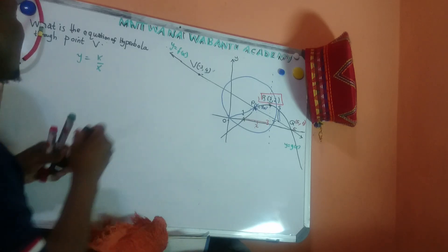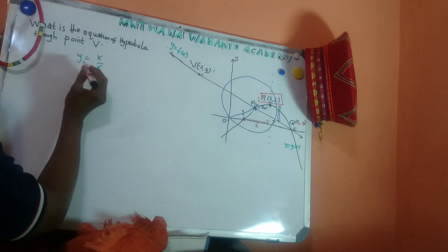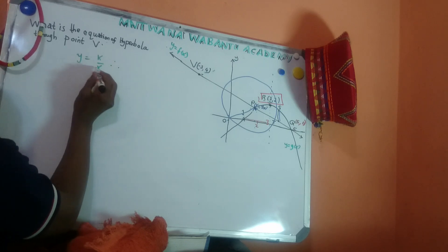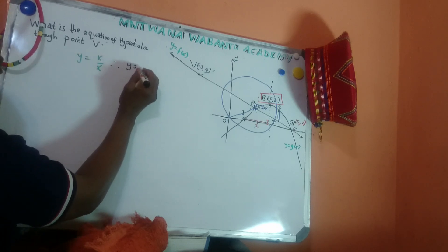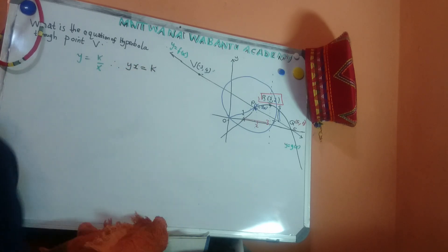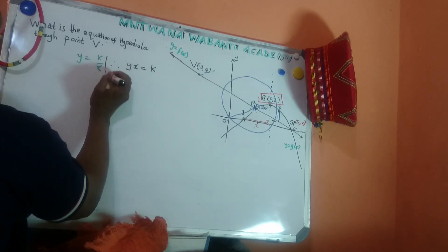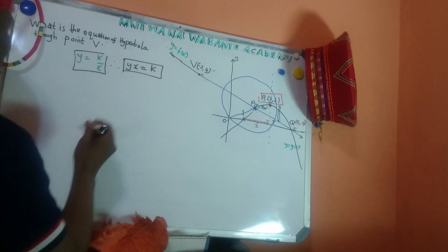But sometimes, some kind of books, they say, okay, some other books, they say, this same thing, meaning if you take x times y, let me say yx equal to k. So the same thing. If someone write like this, or you write like this, it's the same story.